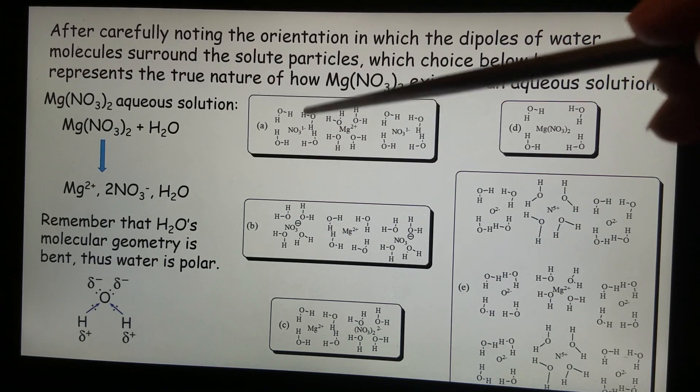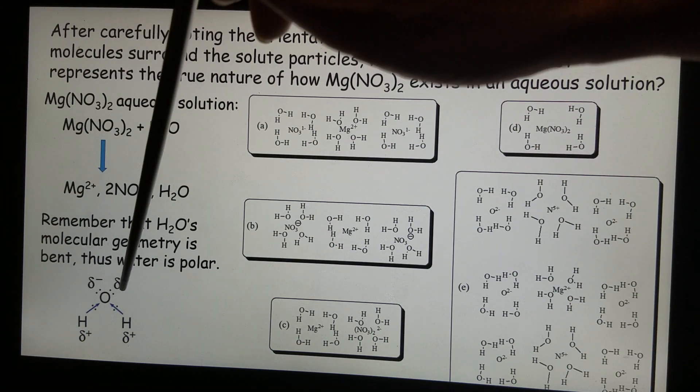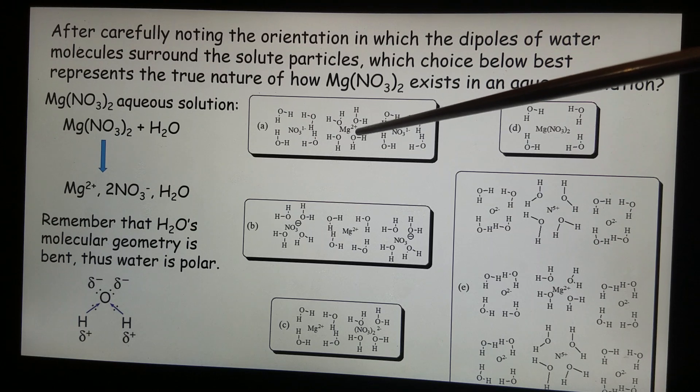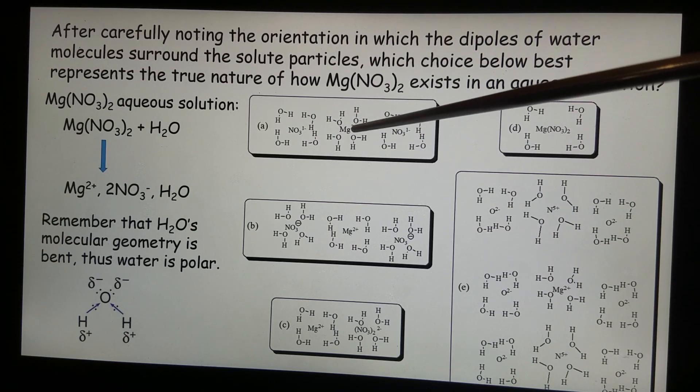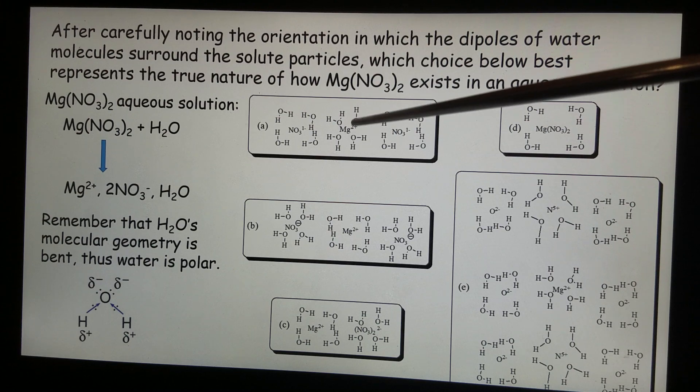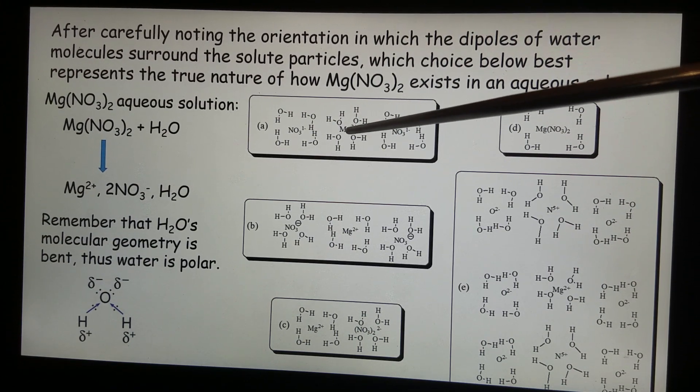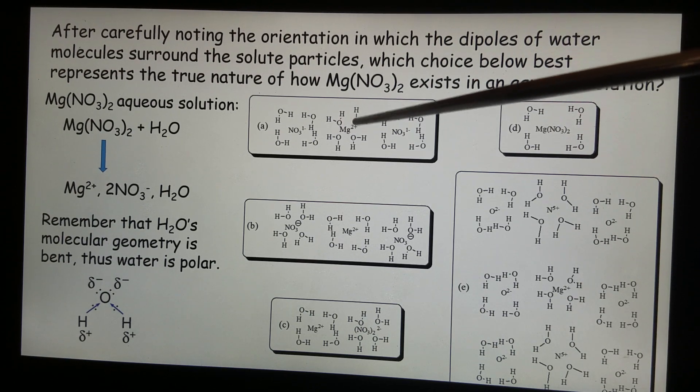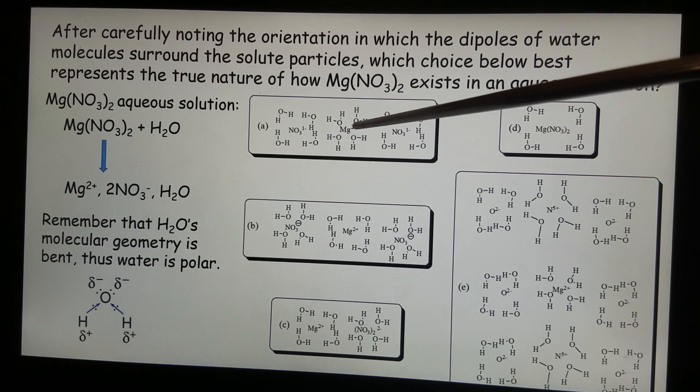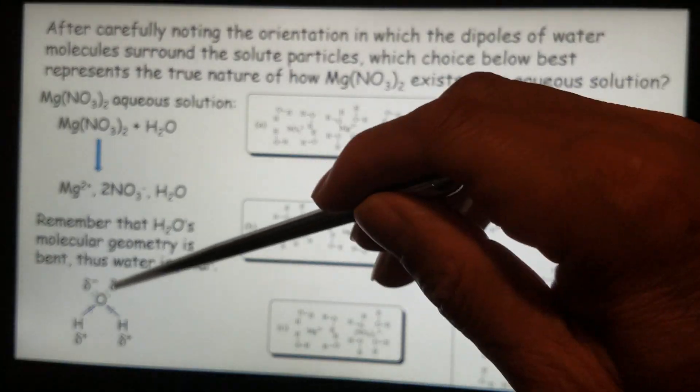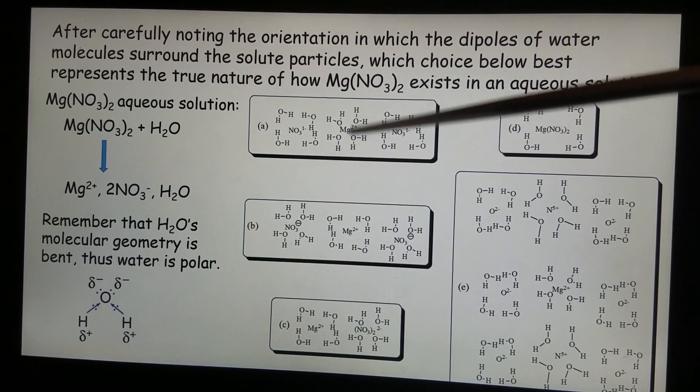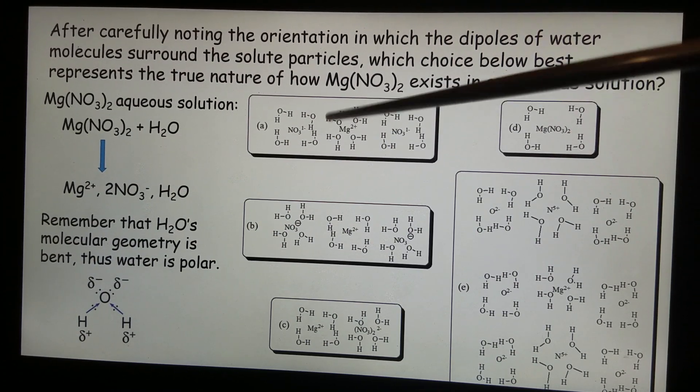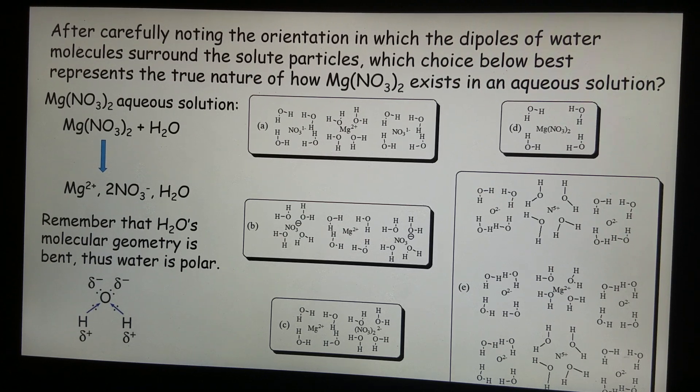Not the oxygen, because the oxygen is the partial negative end. And now look at magnesium 2 plus. Since magnesium 2 plus is a cation, then it's attracted to the negative end of the polar water molecule. So therefore A, so far, everything looks good to me.